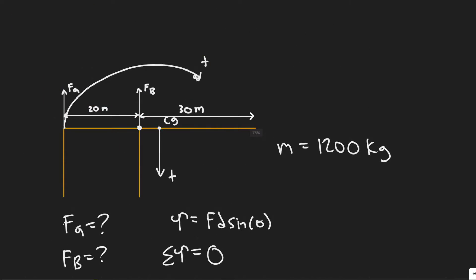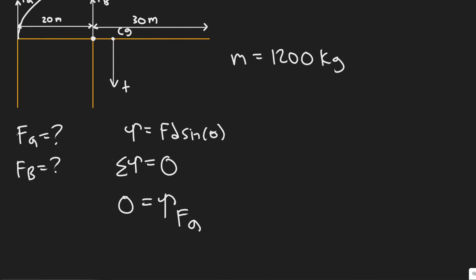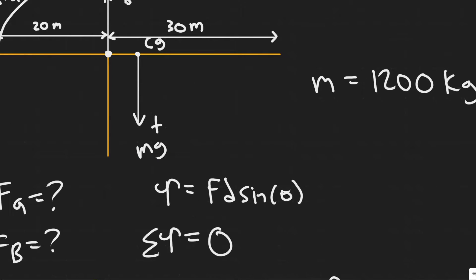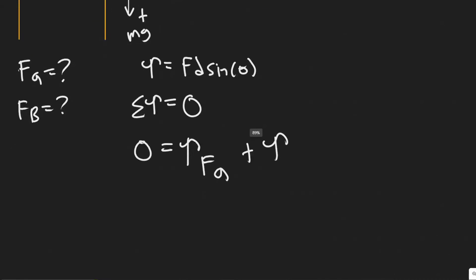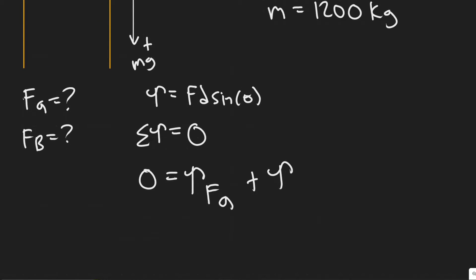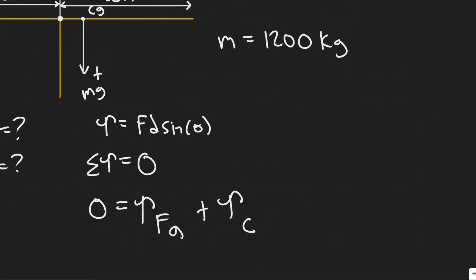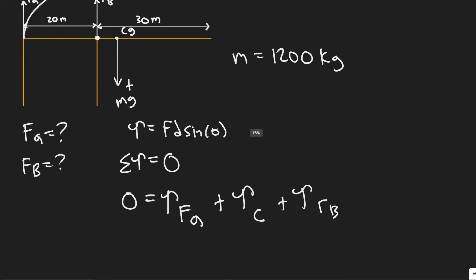FA causes rotation in a positive direction, so we have the torque due to FA. We add the torque due to the weight of the structure — the weight force is mg, mass times gravity. We'll call it Tc. And then we also add the torque due to force B, giving us three torques in total.